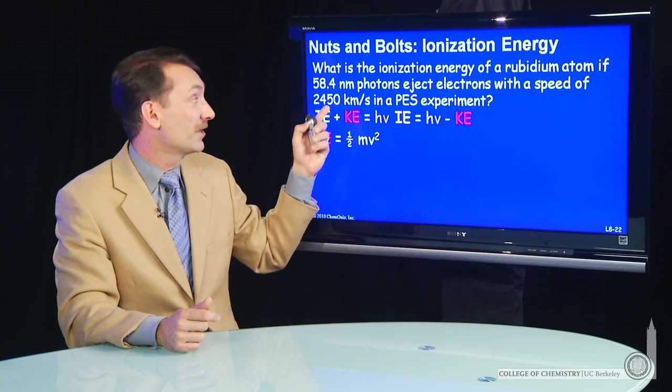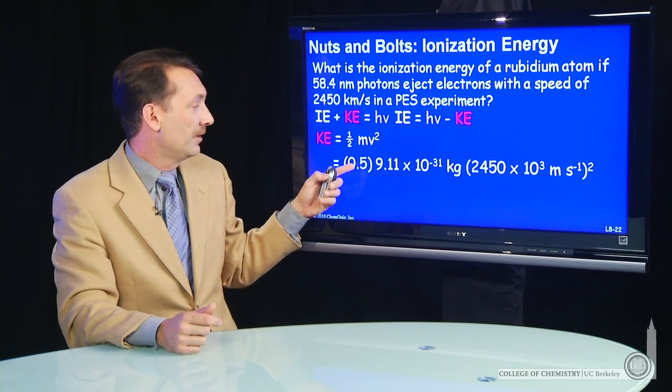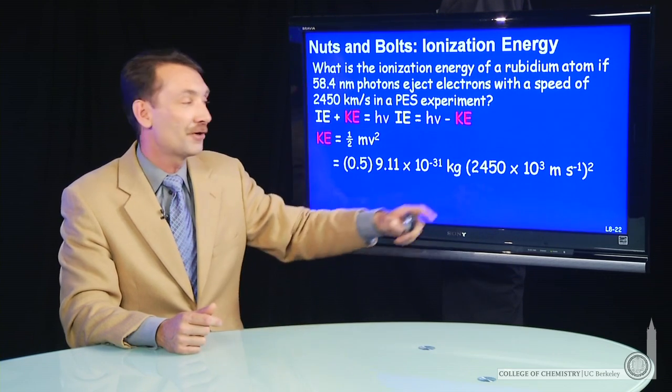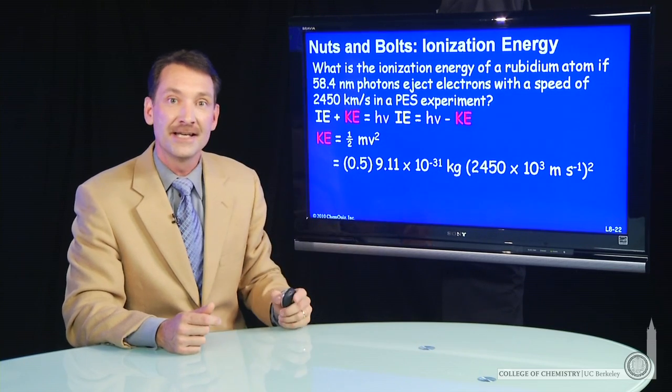Kinetic energy of an electron at 2450 kilometers per second. We've done these kind of things before. One half times the mass of the electron times the velocity squared.